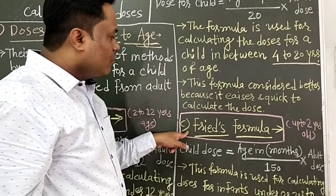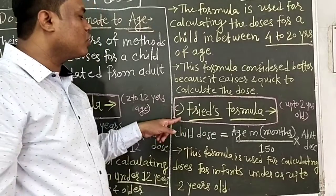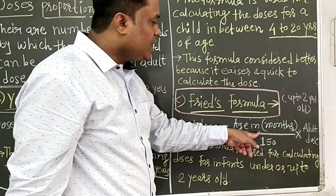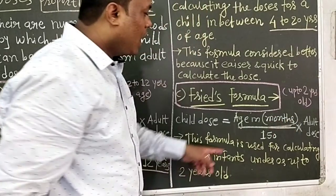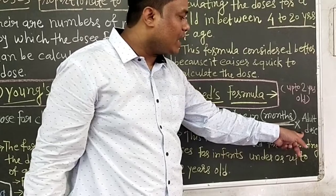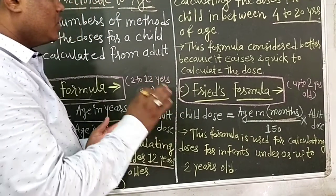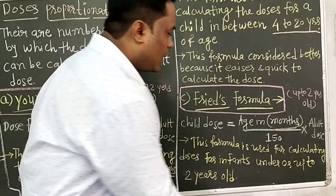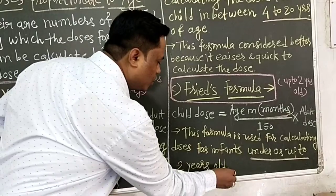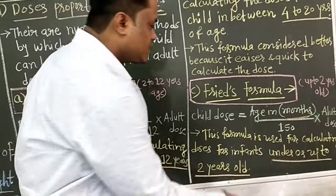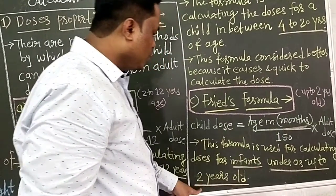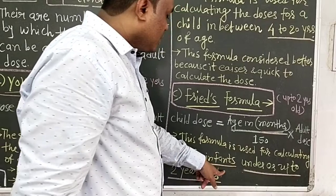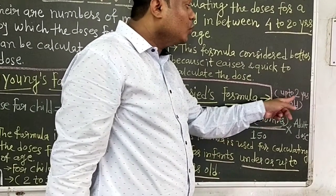The third formula is Fried's formula, also used to calculate doses according to age group. The formula is: Child dose = (Age in months) / 150 × Adult dose. This formula is used for calculating doses for infants up to 2 years old.